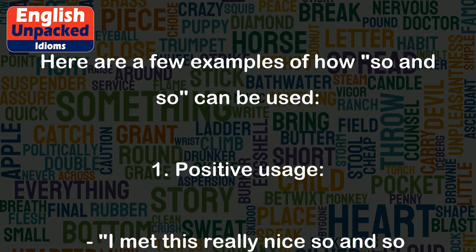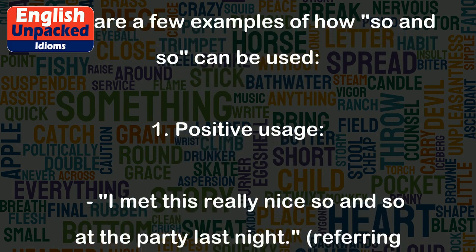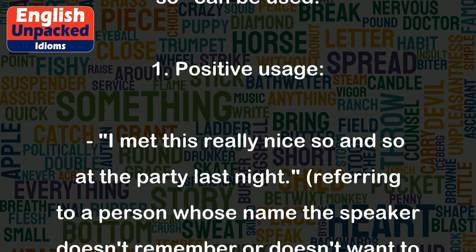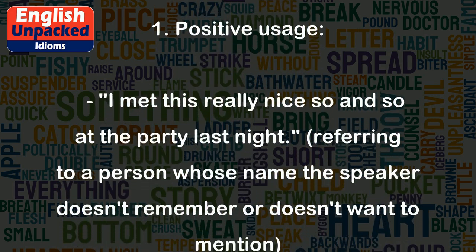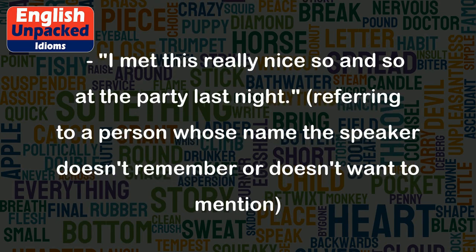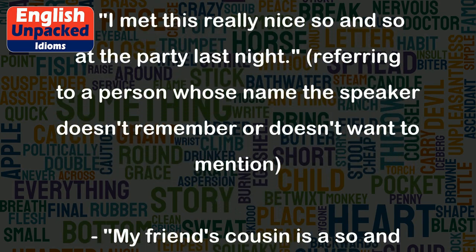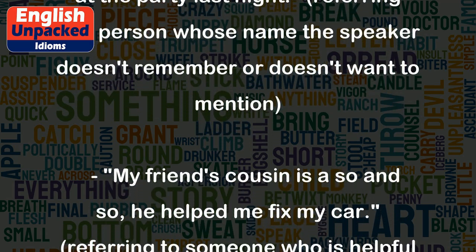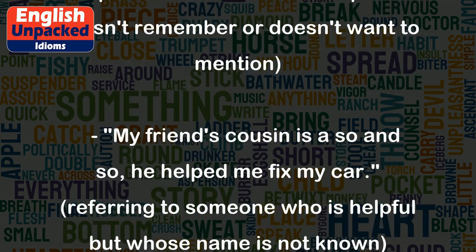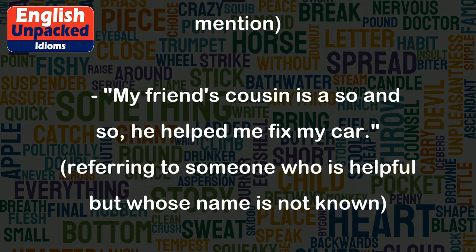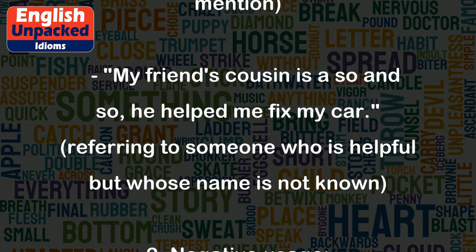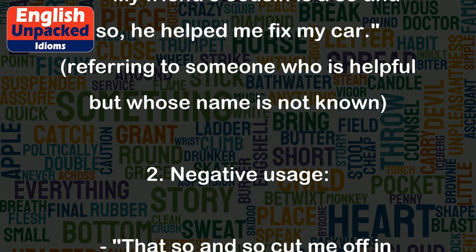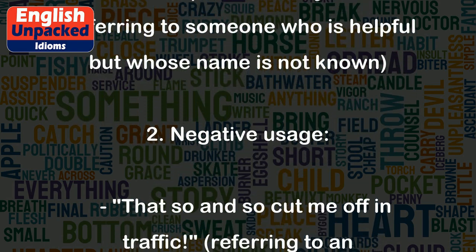Here are a few examples of how "so and so" can be used. Positive usage: "I met this really nice so and so at the party last night" — referring to a person whose name the speaker doesn't remember or doesn't want to mention. "My friend's cousin is a so and so, he helped me fix my car" — referring to someone who is helpful but whose name is not known.